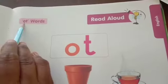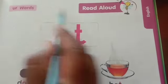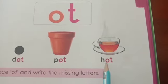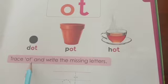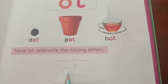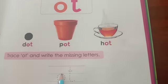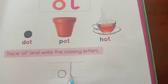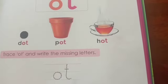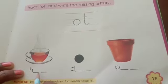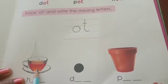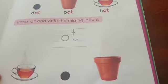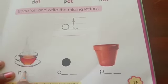Log, Jog, Fog — like this you have to complete this page, children. Come to the next page, page number 19. OT odd words. Read aloud — Odd, Dot, Hot. Trace Odd and write the missing letters. Shall we trace now? T — Odd. Here we should write the missing letter. What picture is this? Yes — Odd. Where is it? Yes, here it is.